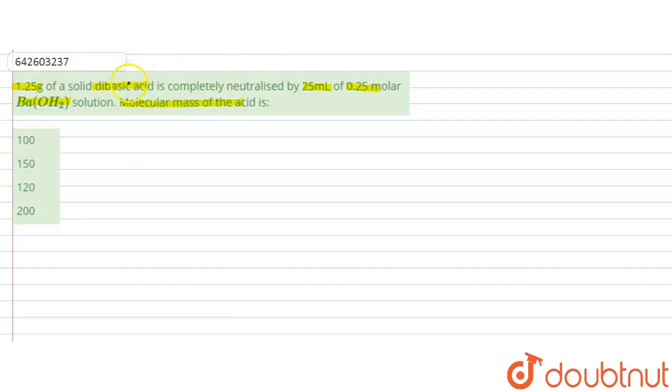So we have to calculate the molecular mass of the acid among the given options. First, let the solid dibasic acid - it means it will give 2H+ ions - so let this dibasic acid as H₂A.